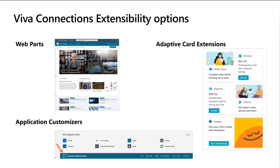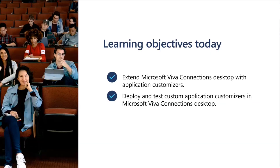The learning objective of today: we will go through one learn module and actually go through how to extend the Viva Connection desktop with application customizers. Application customizers can be used in the Viva Connection desktop experience, but not in the mobile experience, because mobile is all about adaptive cards. We're going to create, deploy, and test a custom application customizer in the Viva Connection desktop throughout.